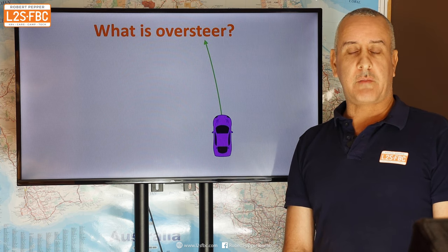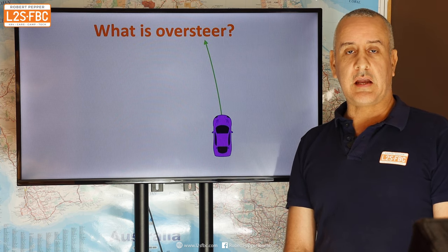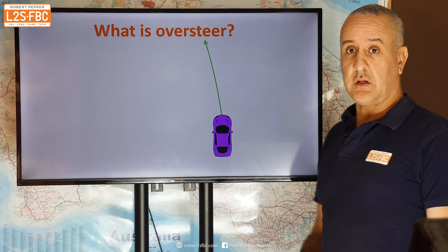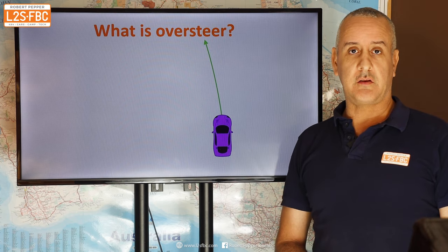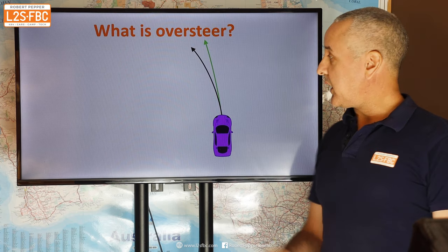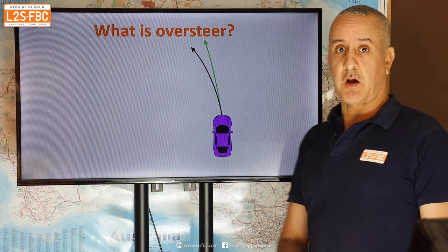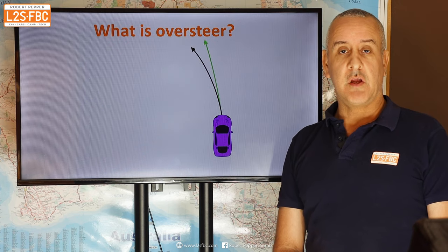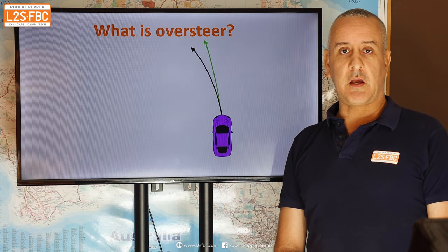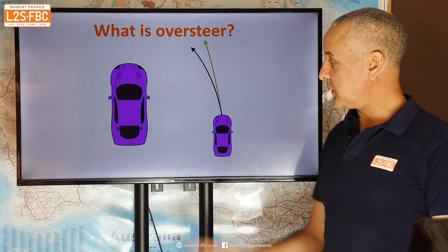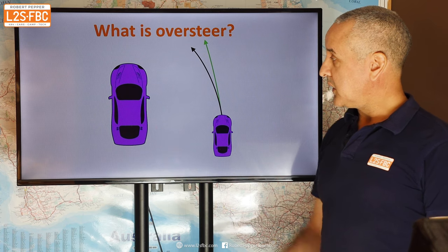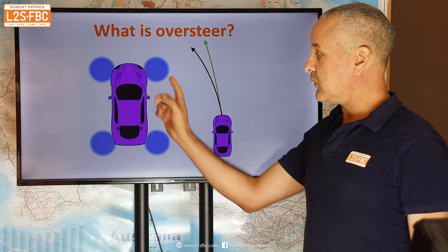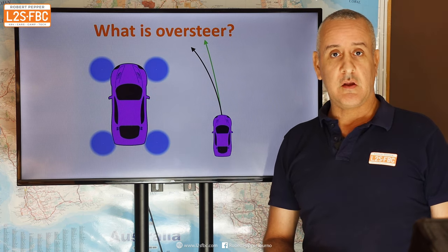Let's talk about what oversteer actually is. Here we've got a green arc, which is the path we'd like the car to take, and a black arc, which is the path the car is actually taking. To explain that, we need to get into the circles of traction. I'm going to blow the car up and put four traction circles at each of the wheels.